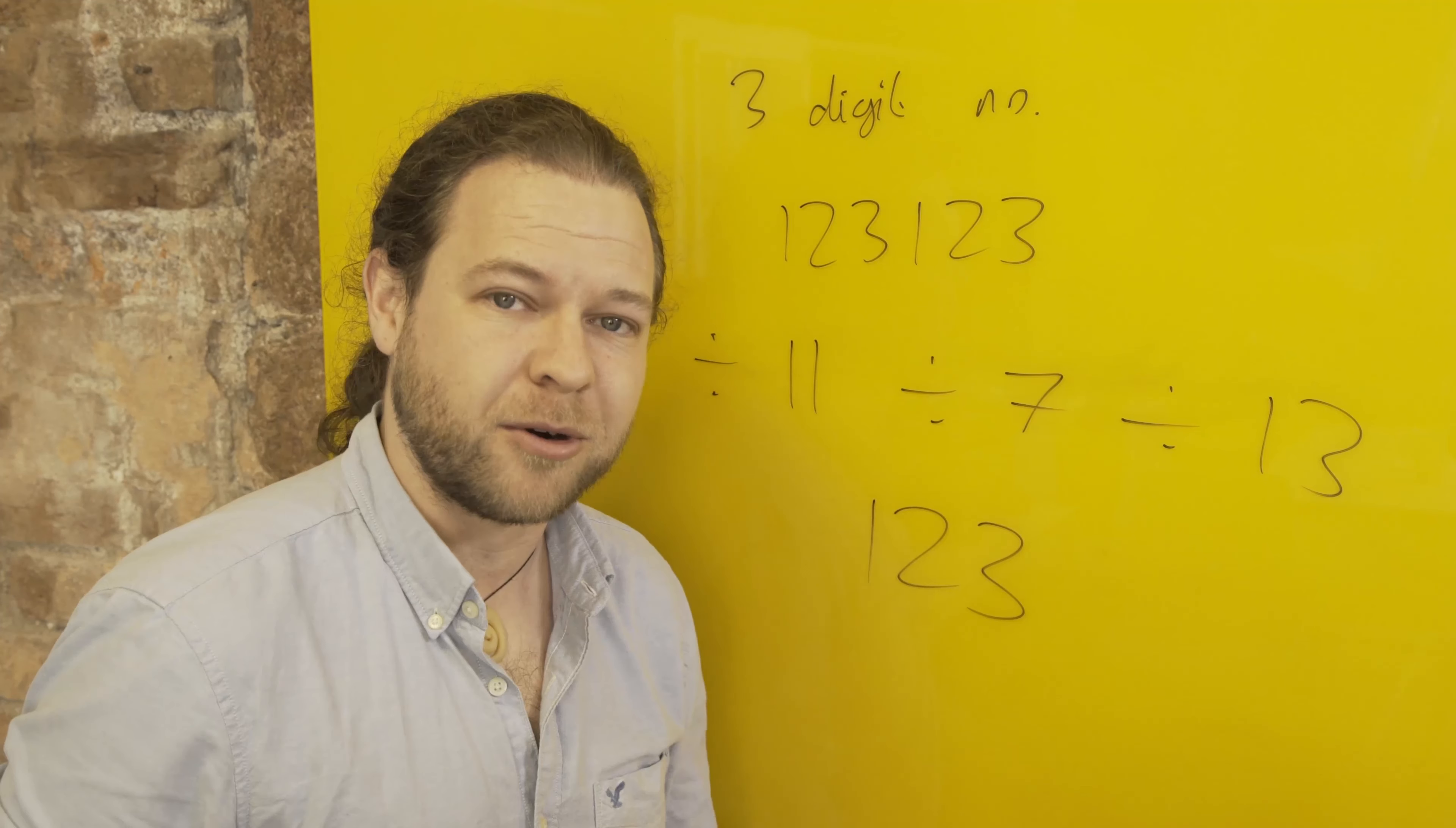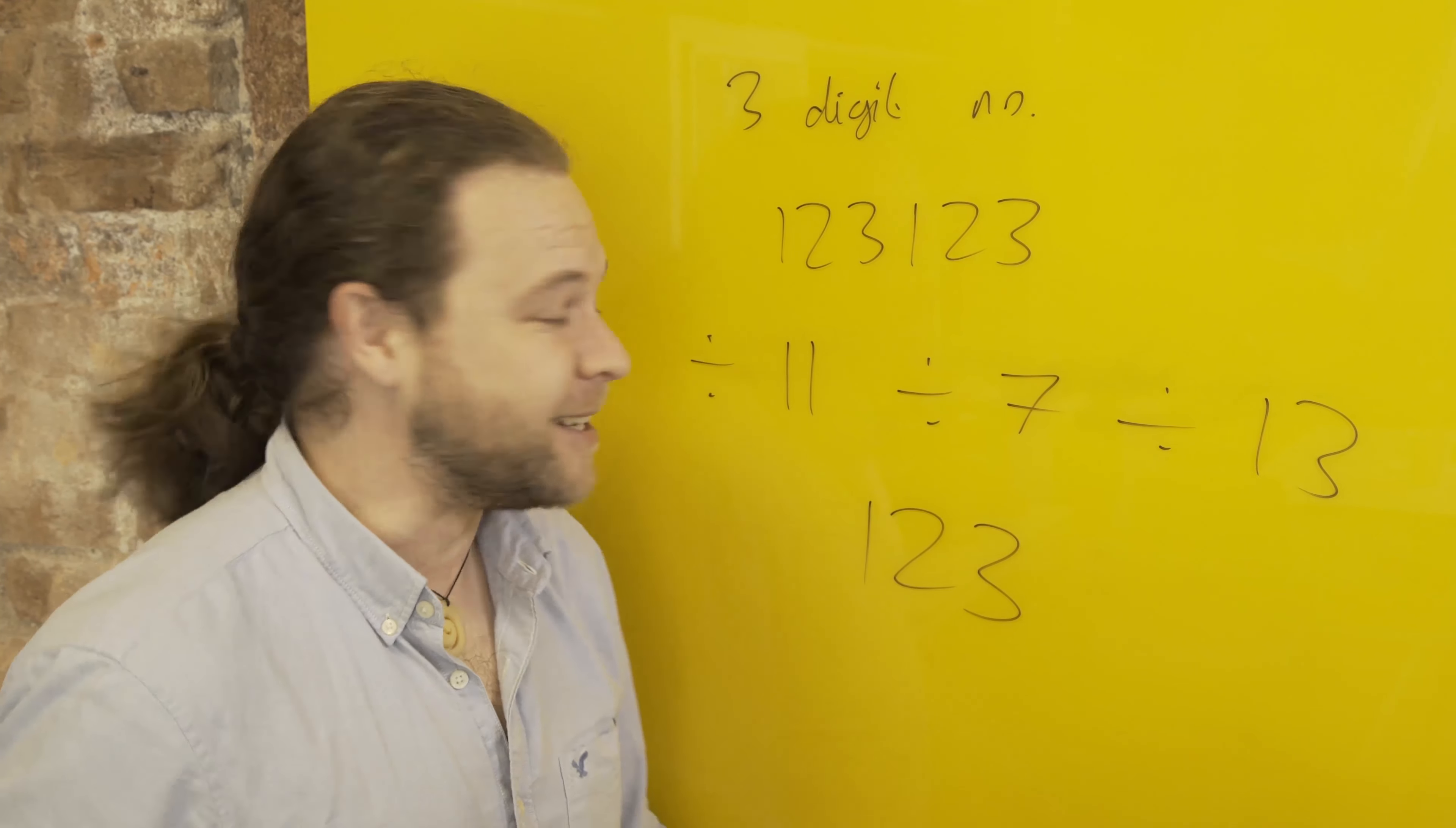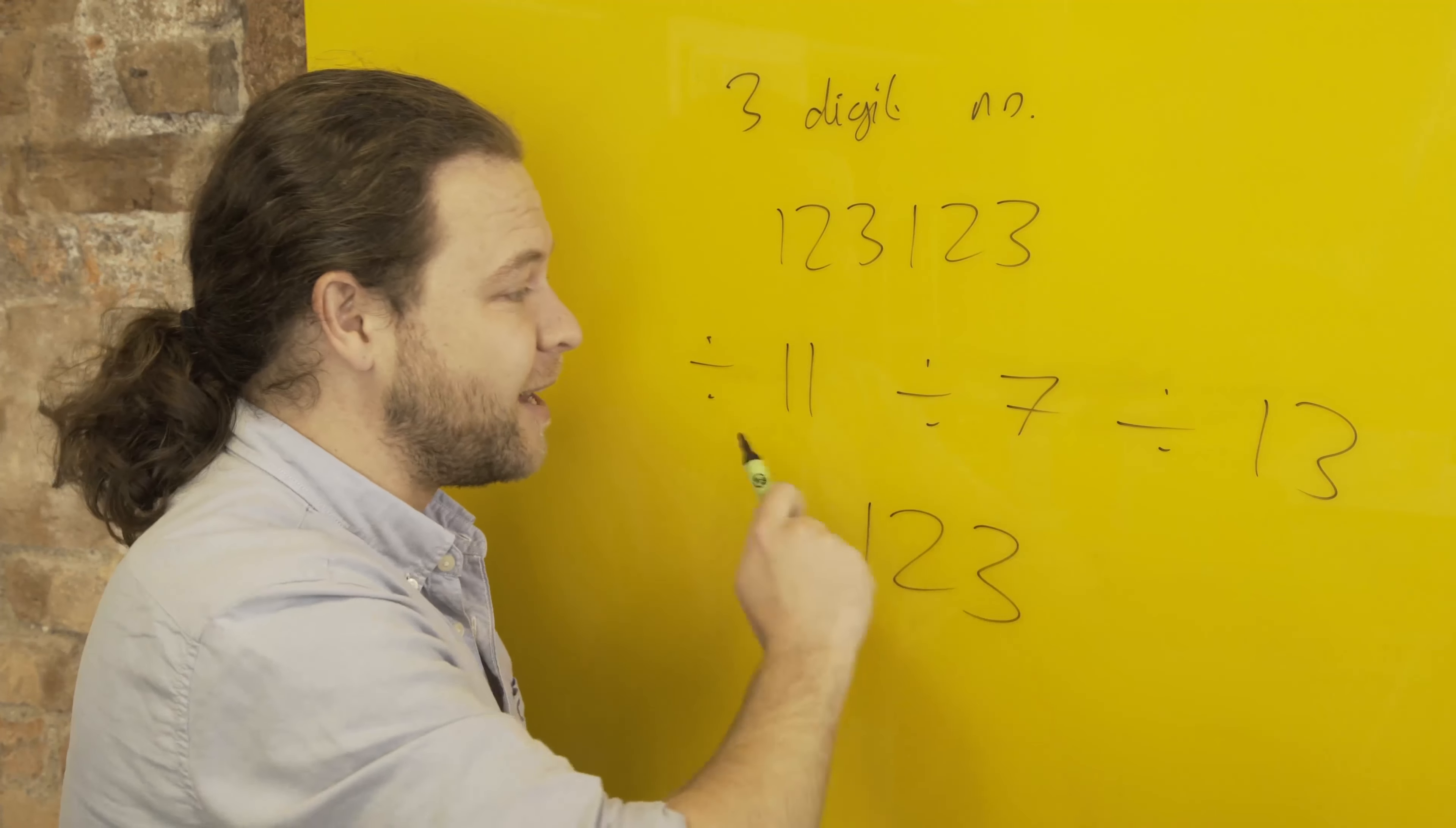Along the way we always had a whole number answer as well, which is slightly surprising until you realize what's going on. Actually, if you realize that the division order doesn't matter—I could have divided these in any order.